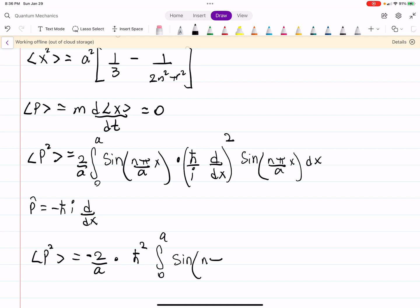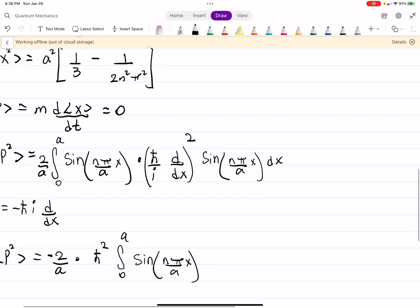0 to a. Sine of n pi over a x. And then you have to take the derivative of this twice. So, you'll get n pi over a squared by the chain rule. And then sine of, not squared, but you'll get your sine function back again. And you should get a negative value. So, I guess that's where that negative goes. Since you are taking the derivative twice, one of those will give a negative.